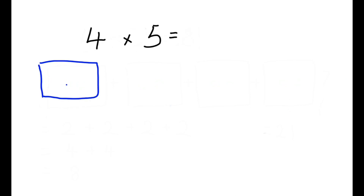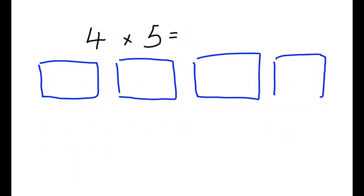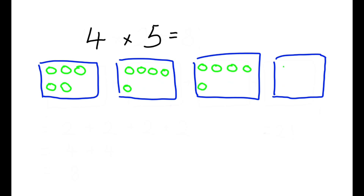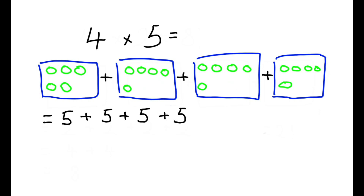4 times 5 means there are 4 boxes, and each box has 5 circles, and the answer is the total number of circles, which is 5 plus 5 plus 5 plus 5, which equals to 10 plus 10. The answer is 20.